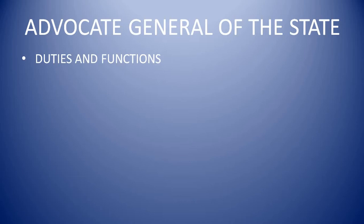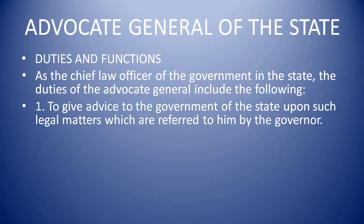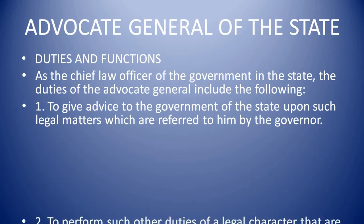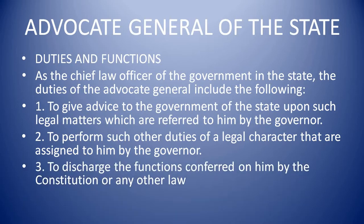Duties and Functions. As the chief law officer of the government in the state, the duties of the Advocate General include the following: to give advice to the government of the state upon such legal matters which are referred to him by the governor; to perform such other duties of legal character that are assigned to him by the governor; and to discharge the functions conferred on him by the Constitution or any other law.